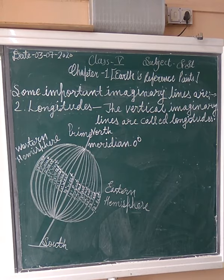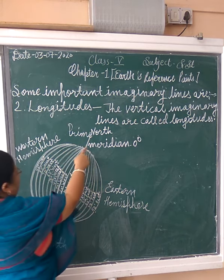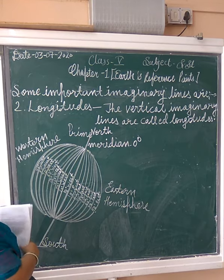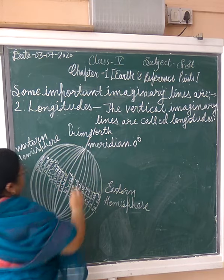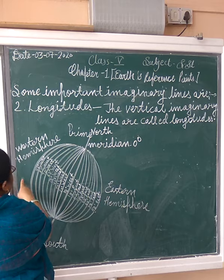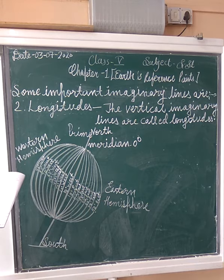Now, some important imaginary lines are second — Longitude. The vertical imaginary lines are called longitudes. Longitudes meet at the poles. Longitudes are measured from 0 degrees up to 180 degrees — from 0 degree to 180 degrees on the western side and 0 to 180 degrees on the eastern side.